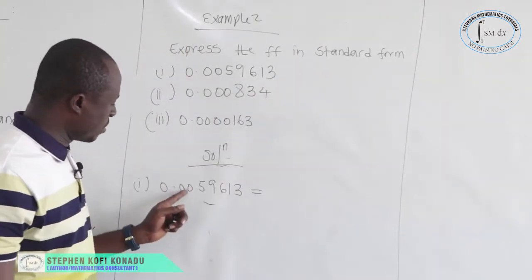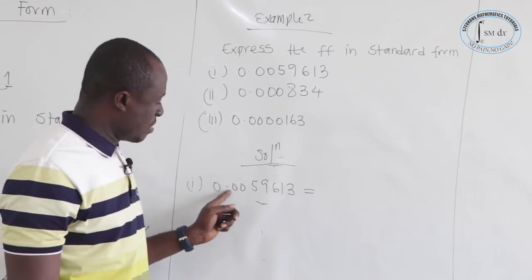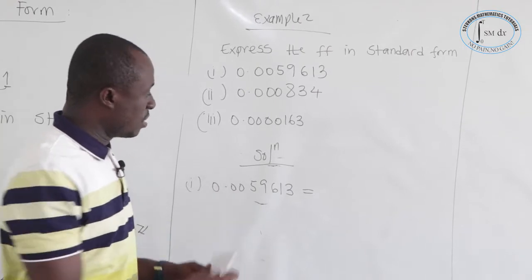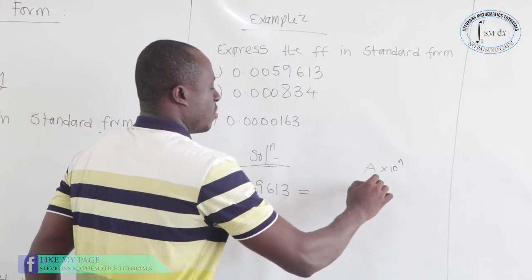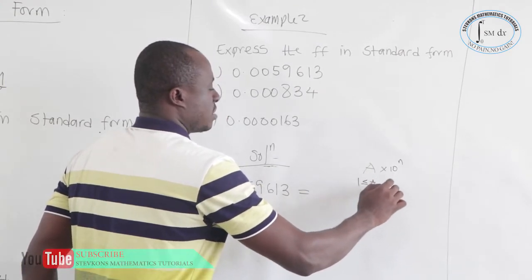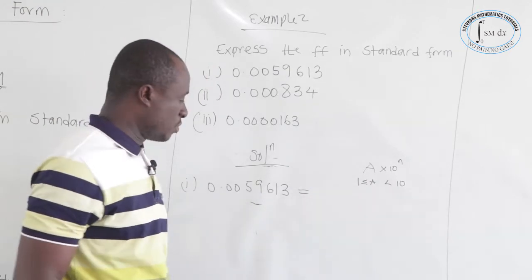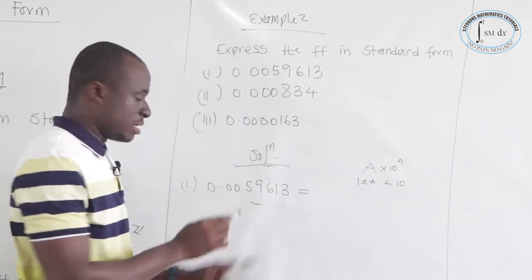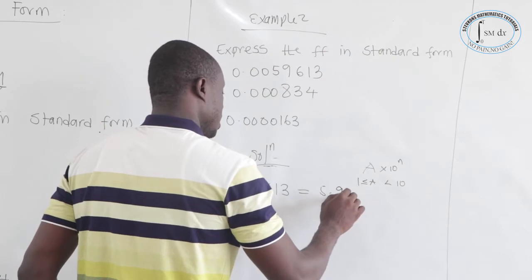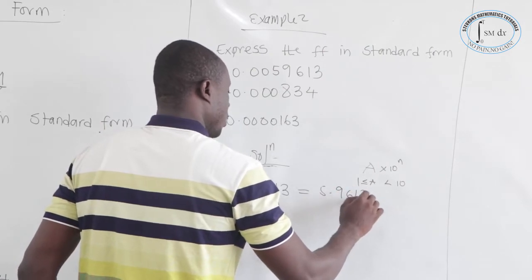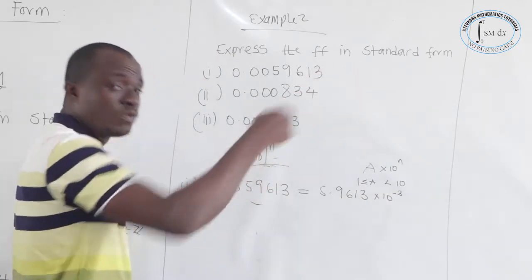Let's look at Example 2 — expand the following in standard form. The first one is 0.0059613. The point is here, and for standard form we need A times 10 to the power N where A is between 1 and 10. This number is clearly out of that range. So we move the point rightward: 1, 2, 3. This gives us 5.9613 times 10 to the power negative 3. The power is negative 3 because we moved rightward.